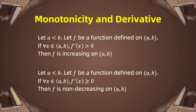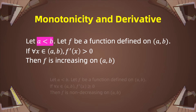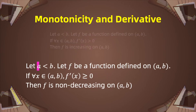That was just an intuitive explanation. Now we introduce the theorem of monotonicity, which allows us to use the first derivative to find the interval where a function is increasing or decreasing. Let a be less than b, and let f be a function defined on the interval a to b. If for all x in (a, b) the derivative f'(x) is greater than 0, then f is increasing on (a, b). If f'(x) is greater than or equal to 0, then f is non-decreasing on (a, b).